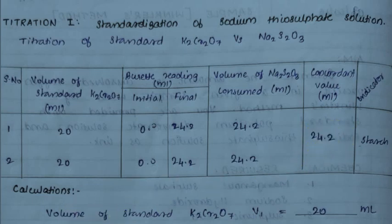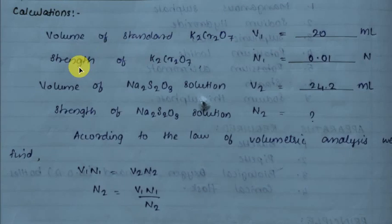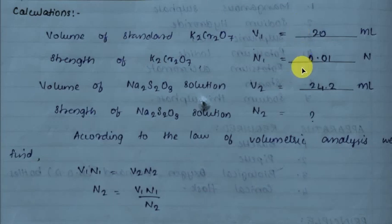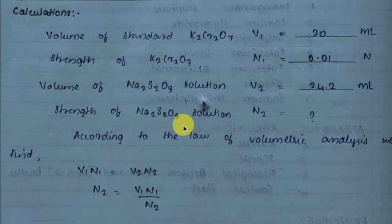Calculation: Volume of standard potassium dichromate V1 = 20 ml. Strength (normality) of potassium dichromate N1 = 0.01 N. Volume of sodium thiosulfate (burette solution), V2 = 24.2 ml (blue to pale green endpoint). According to the volumetric law, V1 × N1 = V2 × N2, so N2 = V1 × N1 / V2.